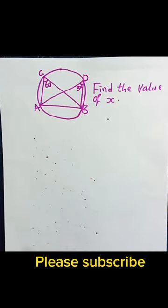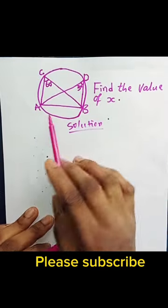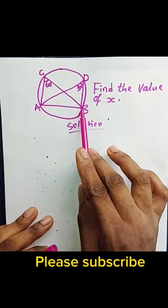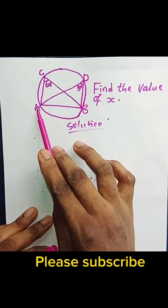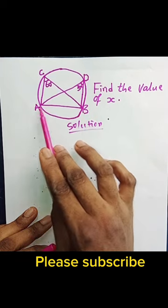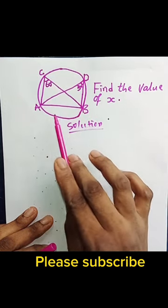Find the value of x in this circle theorem. Looking at this shape, you can see that line AB is a chord that divides this circle into two parts.